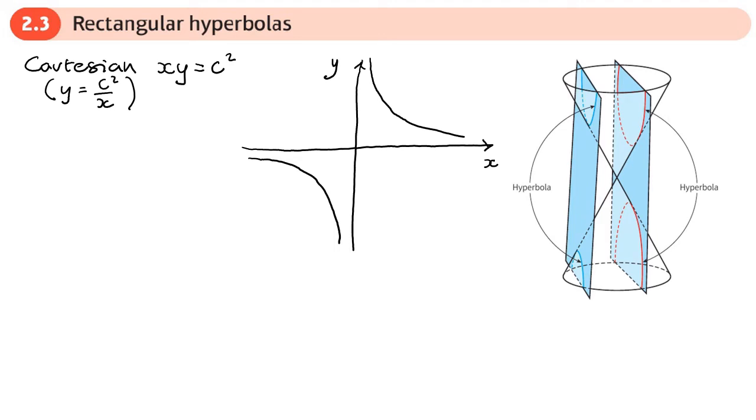In parametric form, we've got a function that defines the x coordinate and the y coordinate. x will be defined as this value of c—it's the same value of c in the Cartesian form. x equals ct and y equals c over t.